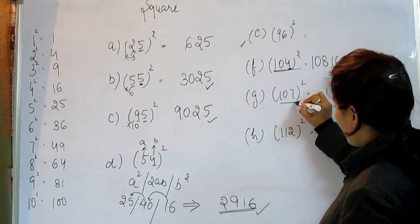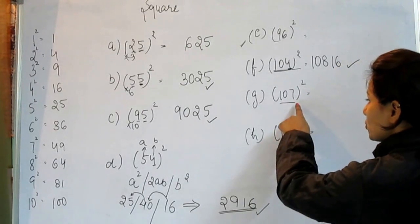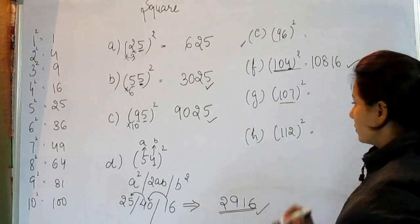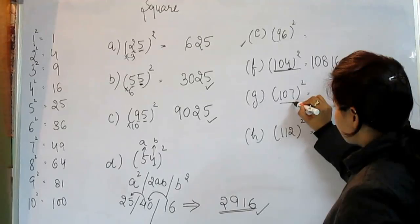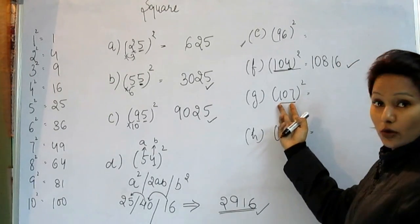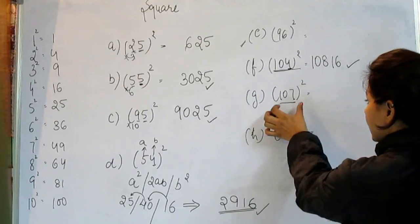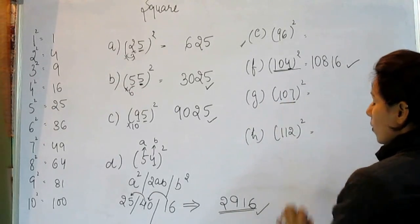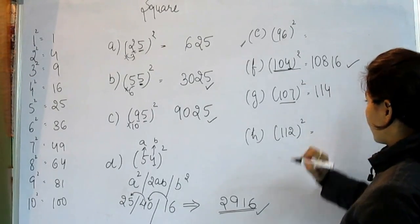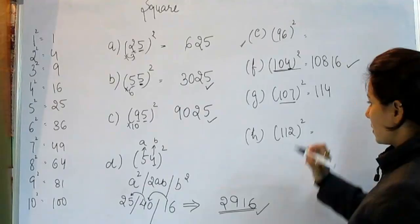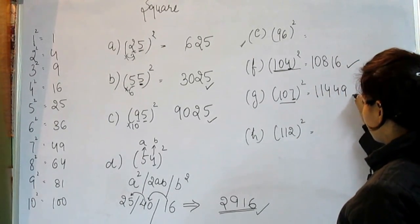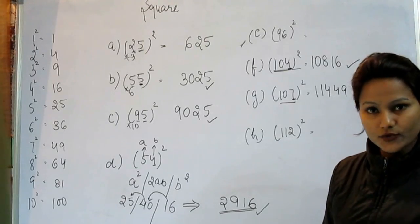Now, all you need to do is add this number 7 to the entire number. When you add 7, 107 plus 7 is equal to 114. And next step is, what is the square of this number? That is 49. This is the answer.